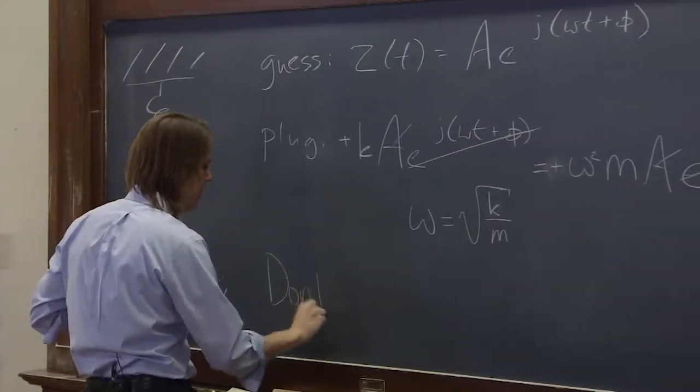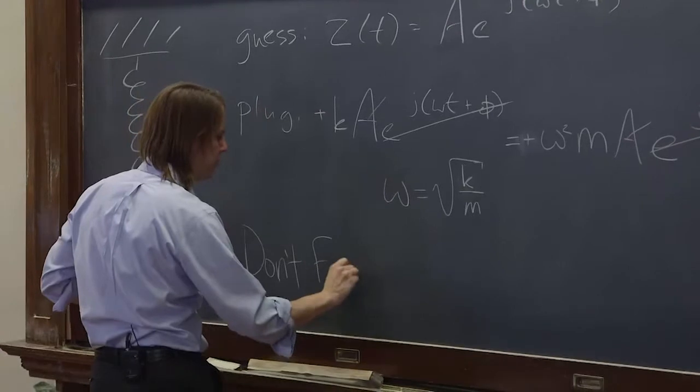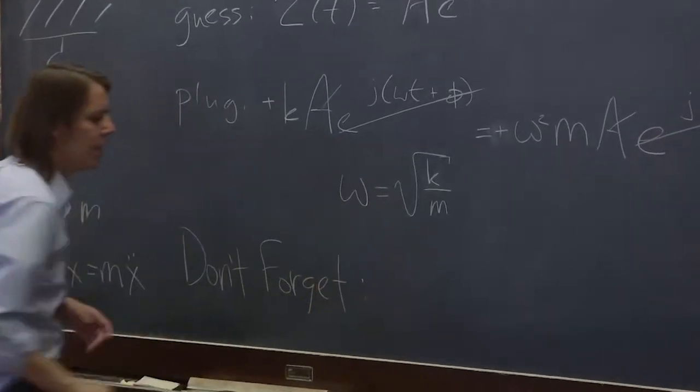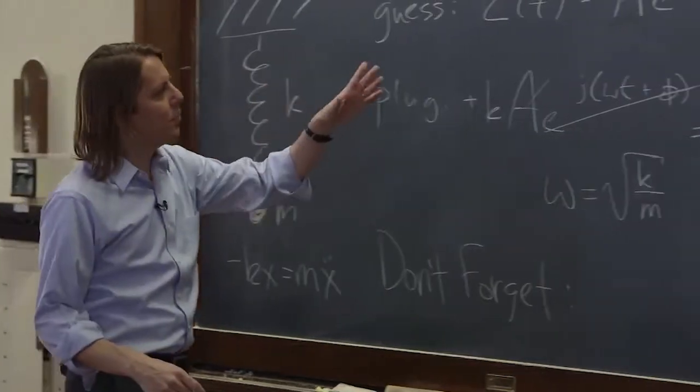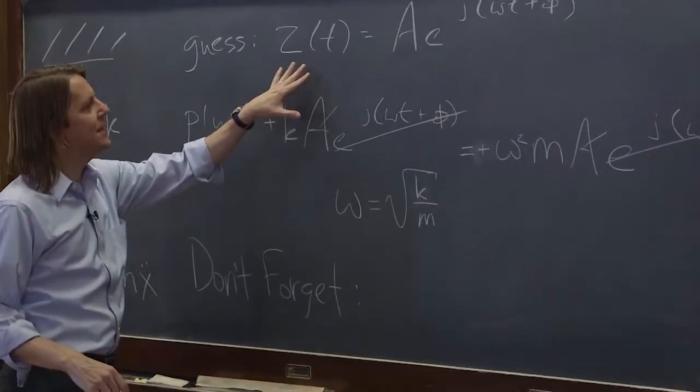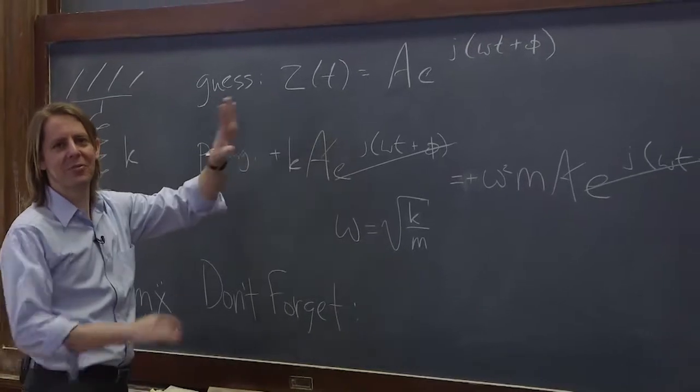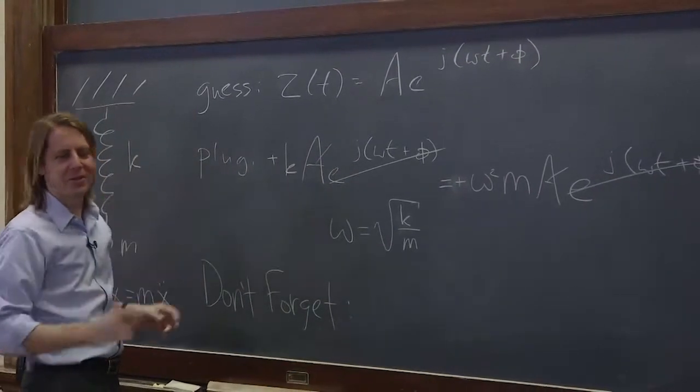Don't forget. We just went off on this crazy little imaginary world in this imaginary plane, and we have now solved for z. But z doesn't describe motion. z is crazy complex number. It's half imaginary. It's not real.